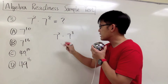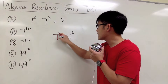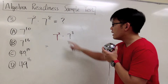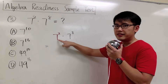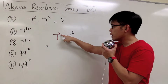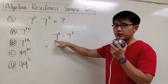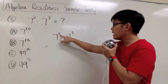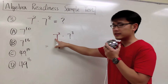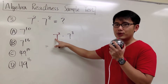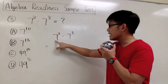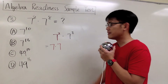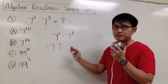We will focus on the first part — 7 to the 2nd power. What does this mean? The power right here is the 2, and the 7 is called the base. The power tells us how many times we have to write down the base, and then multiply them together. Therefore, the 2 tells us we have to write down the 7 twice and multiply them together. So 7 to the 2nd power means 7 times 7 — two 7s multiplying together.